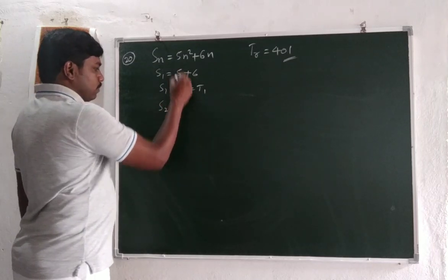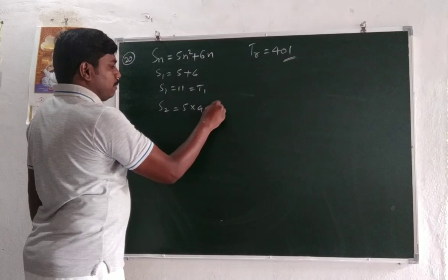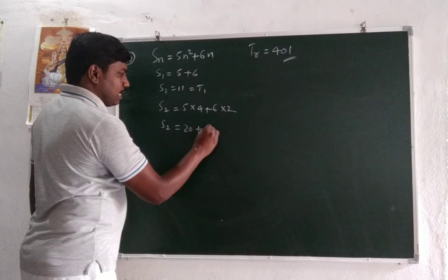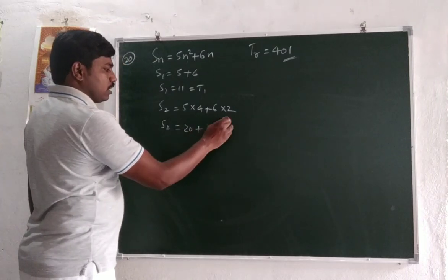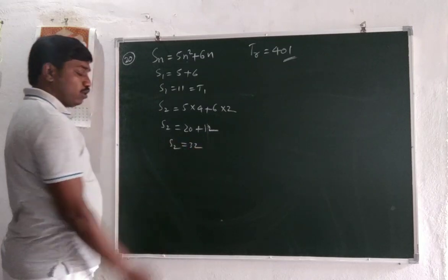Sum of 2 terms is 5 times 2² which is 4, plus 6 times 2... sorry, so 6 times 2 is 12. This means 32. S2 is equal to 32.